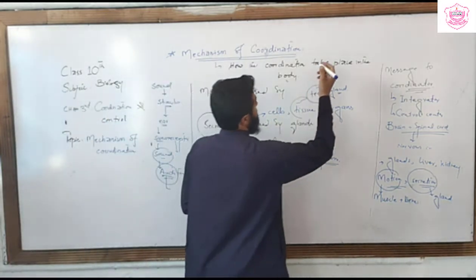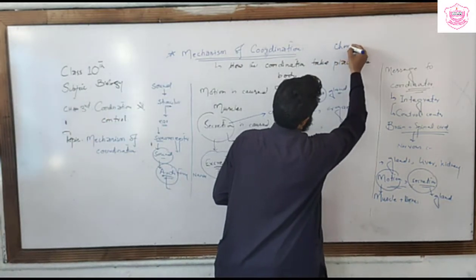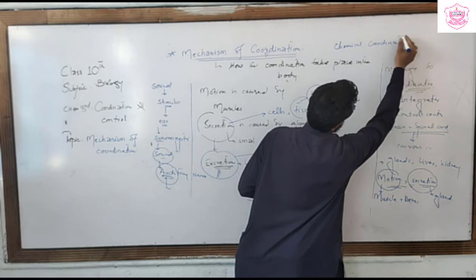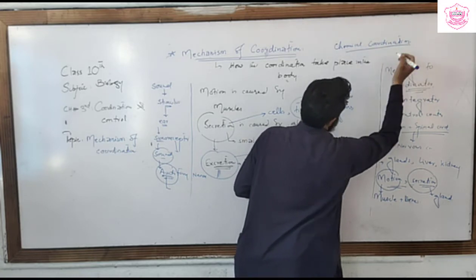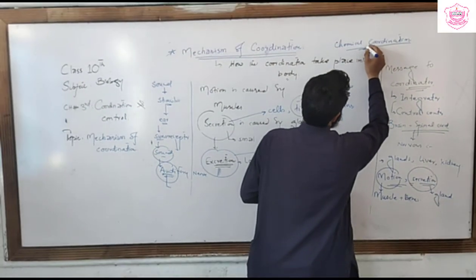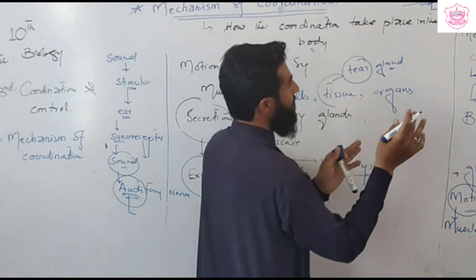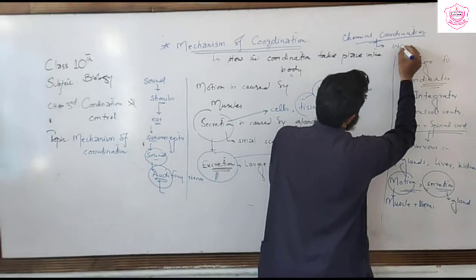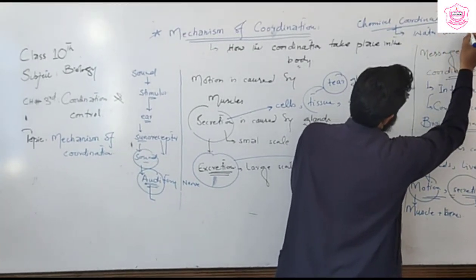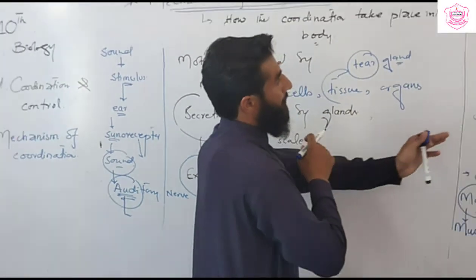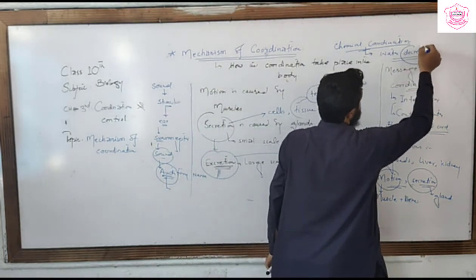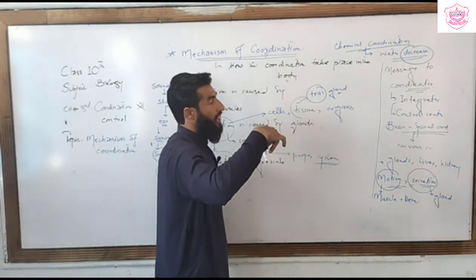For an example of chemical coordination, consider the kidney. Normally, if the water level in the body is reduced, a gland secretes hormones. This hormone — known as ADH, Anti-Diuretic Hormone — is secreted and acts on the kidney. The end of the tubule becomes permeable and absorbs more and more water, restoring the water level in the body.